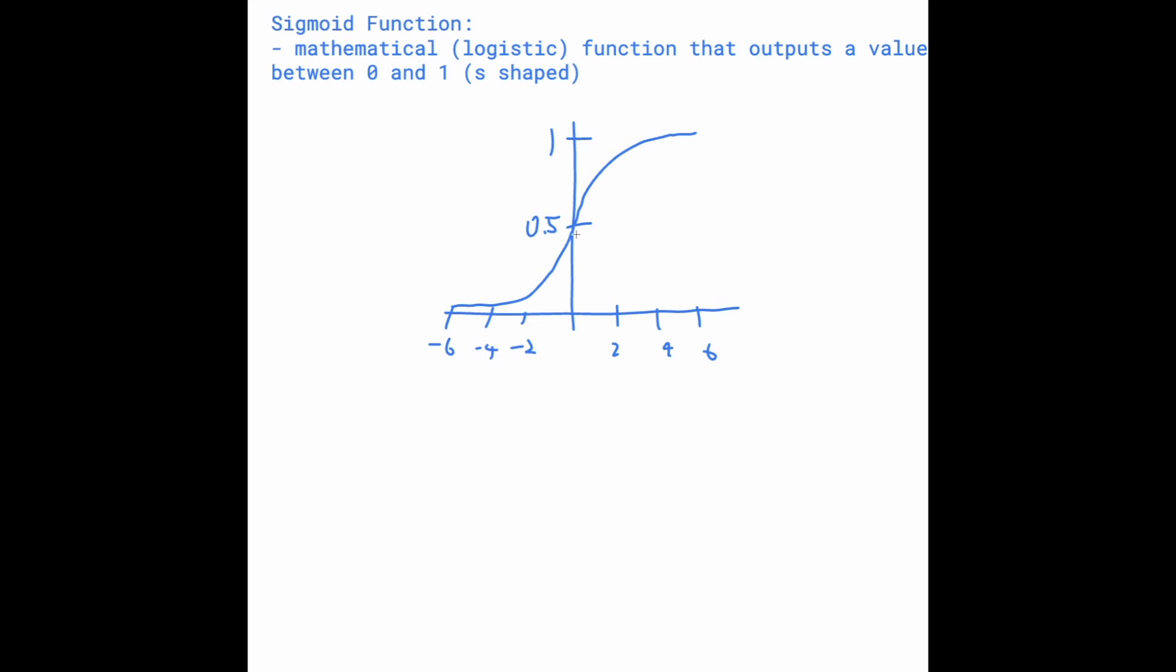And you can see here that it kind of crosses the y-intercept at 0.5. So basically, we have the S-shape and you can kind of think of it as like the asymptote. So as x approaches infinity, the function is going to get very close to being 1, but it will never reach 1.